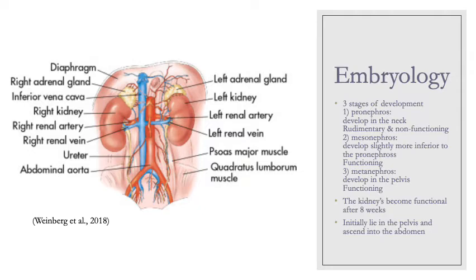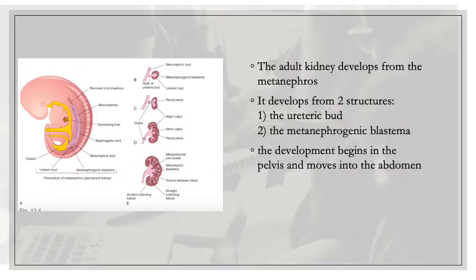Our final stage of kidney development is the metanephros, which begins to develop as early as the fifth week of gestation and starts to function at about nine weeks. This structure develops into our adult kidneys, and in a fetus it's the urine excreted into the amniotic cavity that helps form a portion of the amniotic fluid.